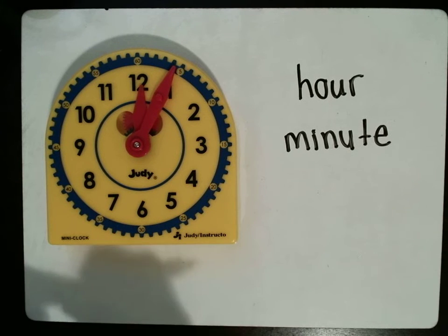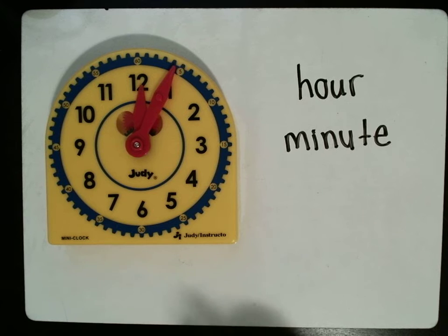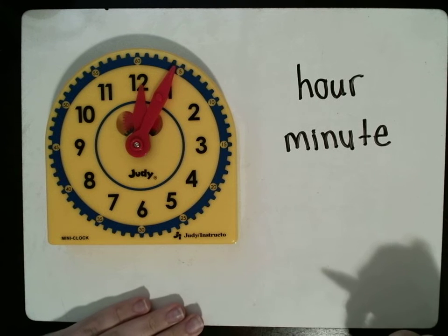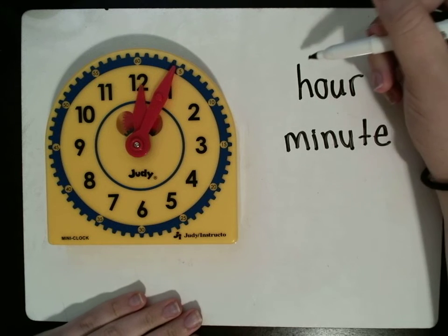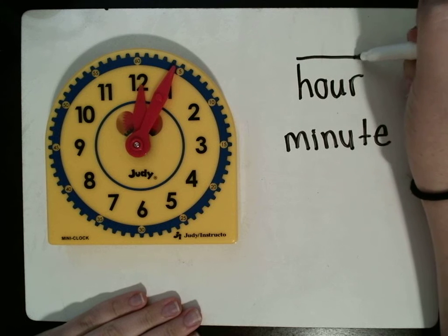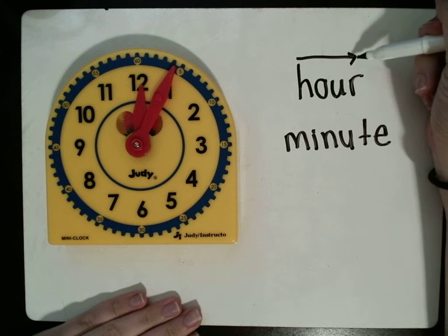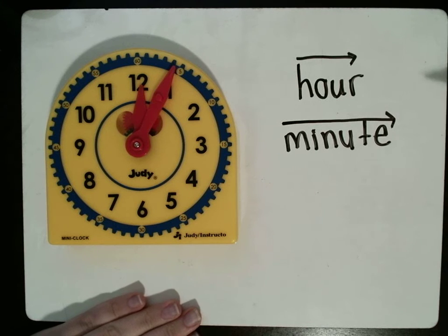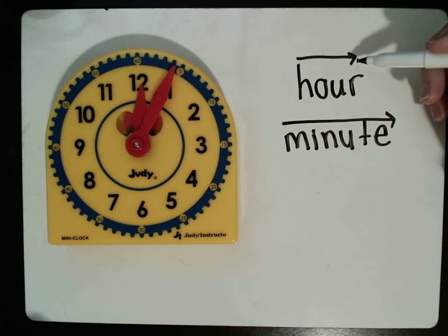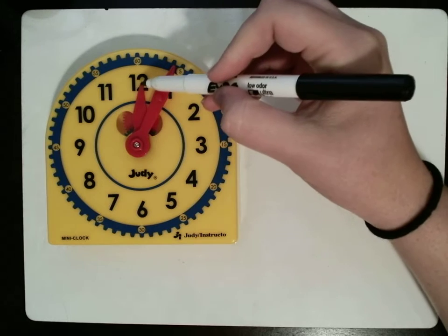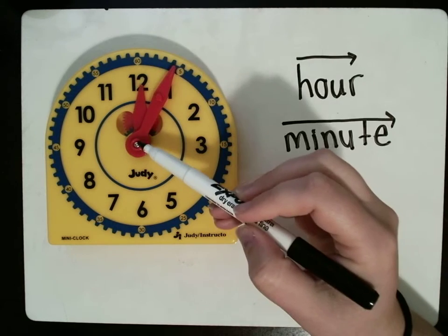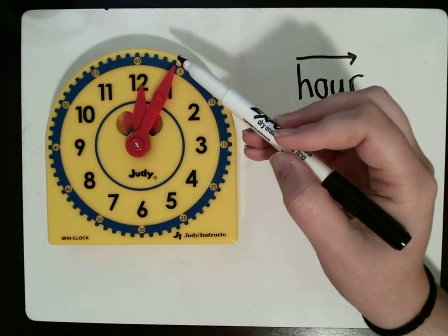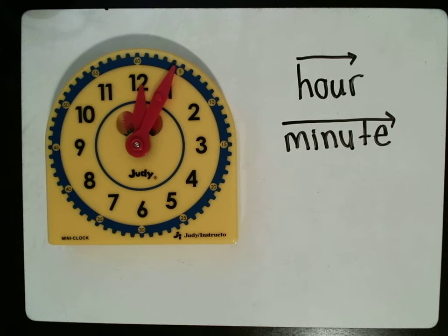Now, to help you tell the difference between the hour and the minute hand, you can think of the word hour is shorter than the word minute. So, the hour hand on the clock is the one that is shorter. The minute hand is the one that is longer because the word minute is longer than the word hour. That's just a trick to help you remember.